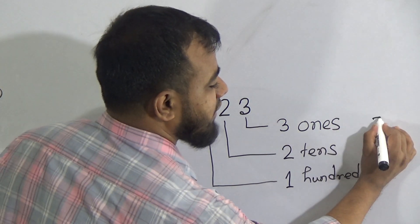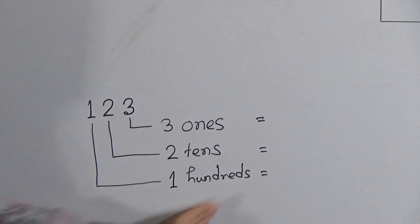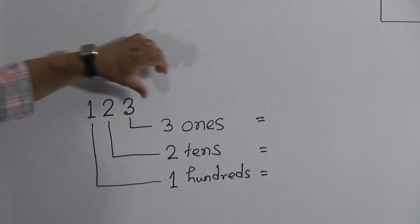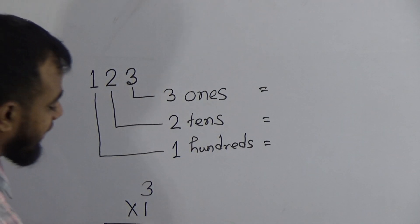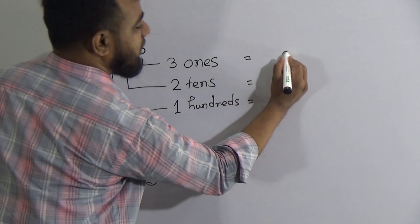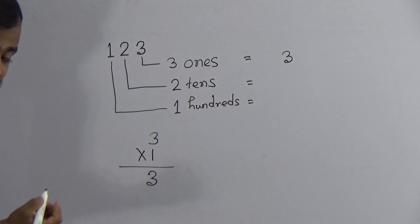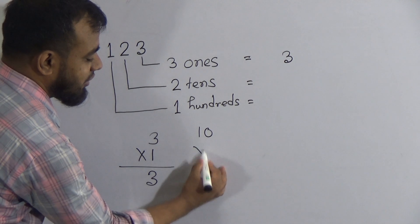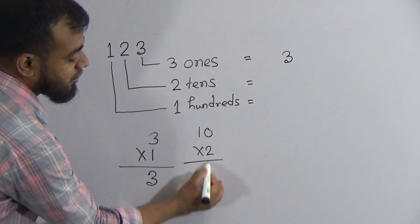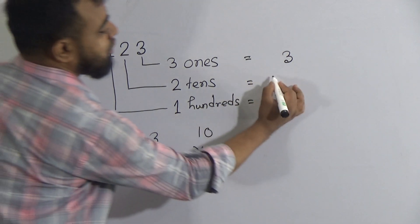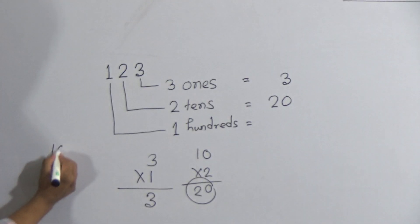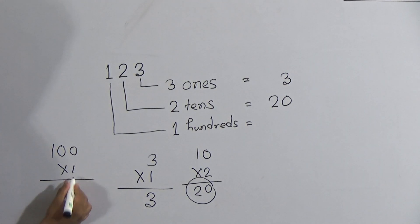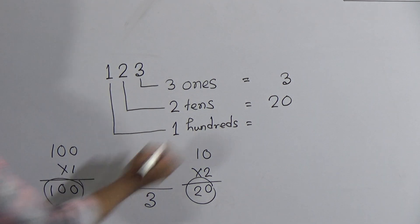Next, give an equal sign on each line and write down the place value of each digit. Three ones means 3 multiplied by 1, which equals 3. Two tens means 2 multiplied by 10, which equals 20. One hundreds means 1 multiplied by 100, which equals 100. This multiplication is just for understanding — it is rough work.